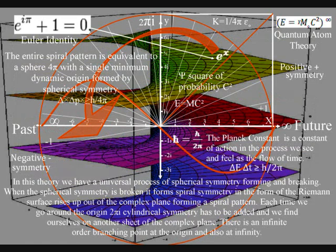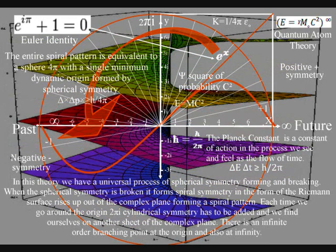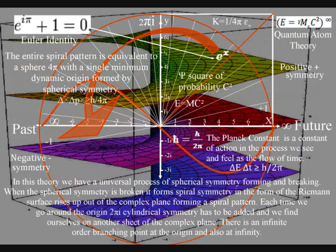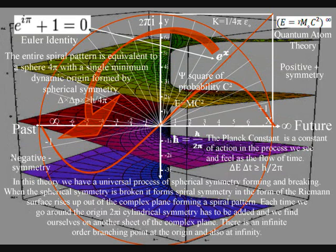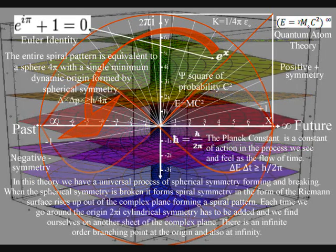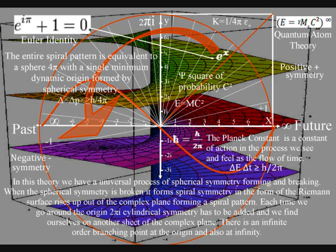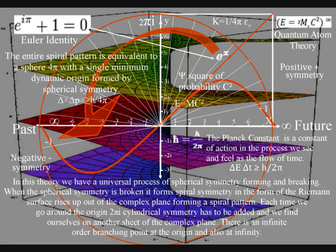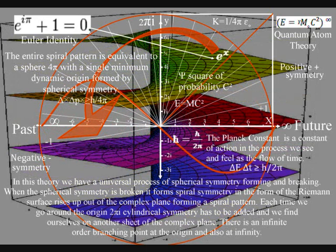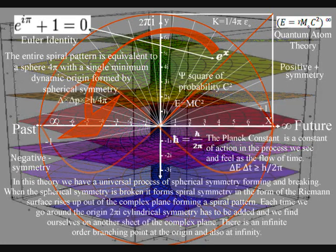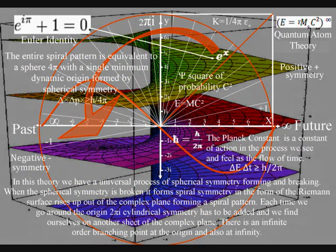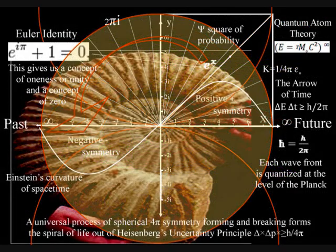At each rotation of the origin, two pi, cylindrical symmetry has to be added, and we find ourselves on another sheet of the complex plane. This spiral symmetry forms line symmetry, representing the timeline, or arrow of time. The entire spiral pattern is equivalent to a sphere, four pi, with a single minimum dynamic origin, formed by spherical symmetry. When the spherical symmetry is broken, it forms the imperfect spiral symmetry of life, that is visible in nature.